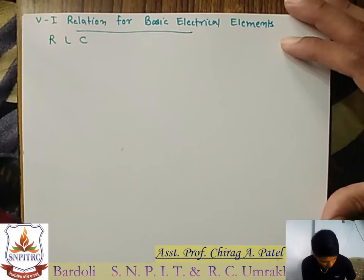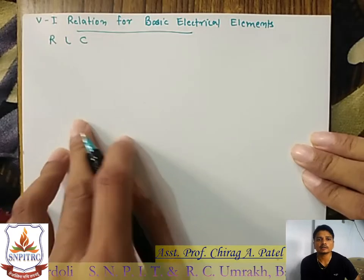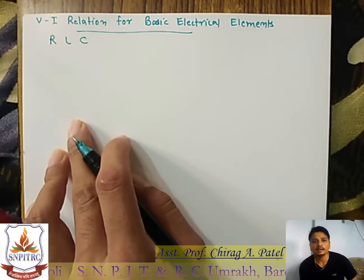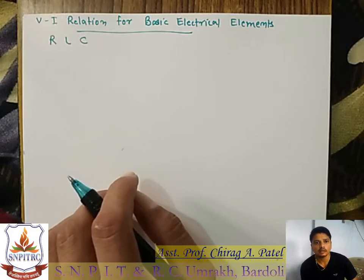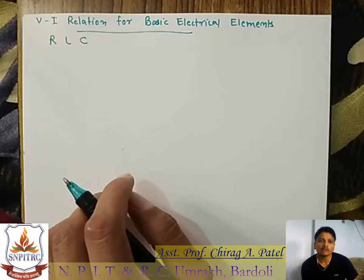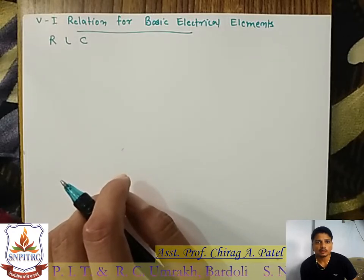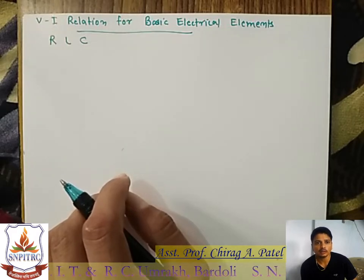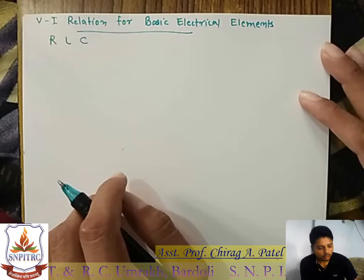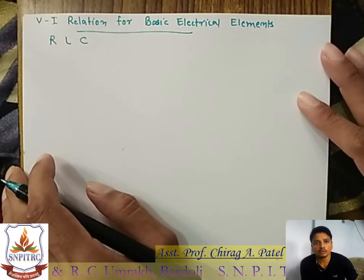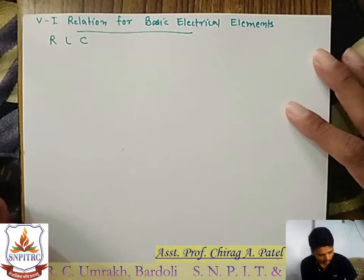Hello everyone, today we are going to see VI relations for the basic electrical elements — R, L, and C. We are going to write down some equations to relate voltage and current for R, for L, and for C. For this subject, it is a most important part — the relationship between voltage and current is the most important part of this chapter, or you can say for the whole syllabus or for electrical and electronics engineering.